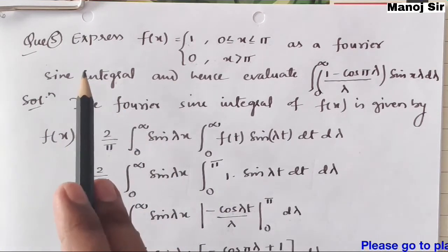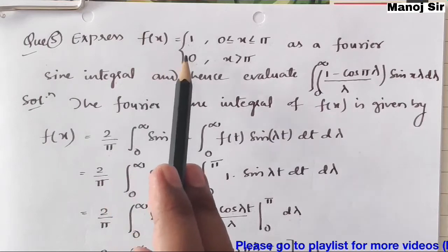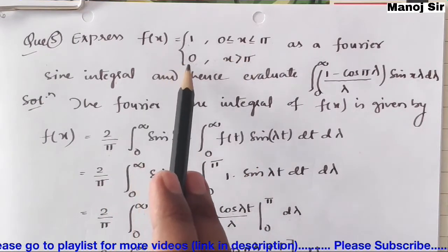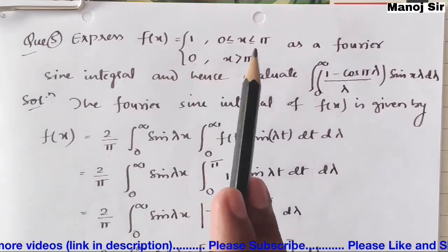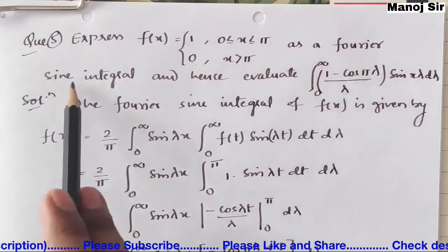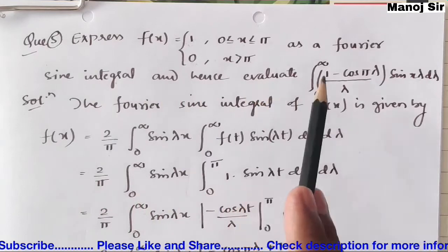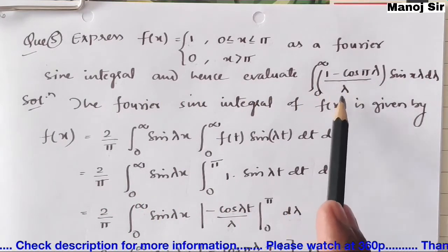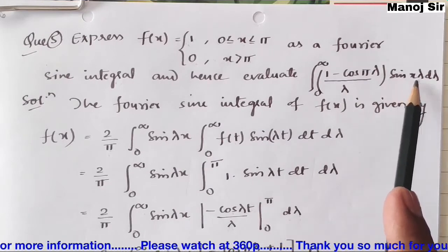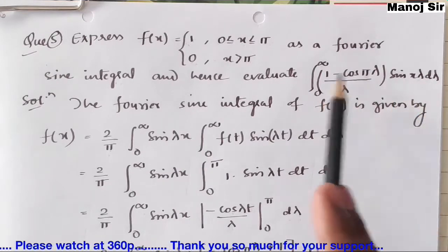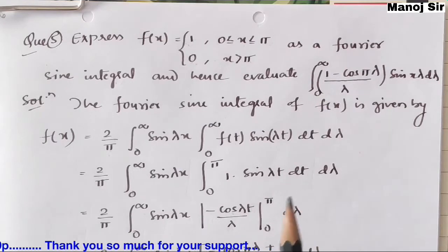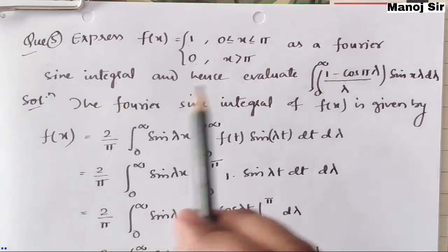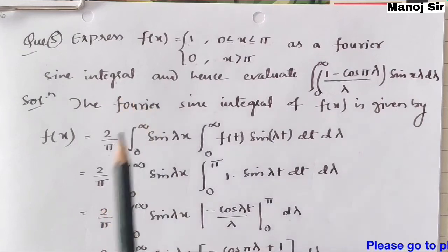Let us start with the question: express f(x) = 1 when x ranges from 0 to π, and f(x) = 0 when x is greater than π, as a Fourier sine integral. Hence evaluate the integration from 0 to infinity of (1 − cos(πλ)) / λ · sin(xλ) dλ. We need to evaluate this part as well.